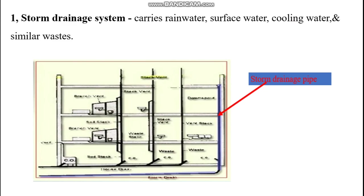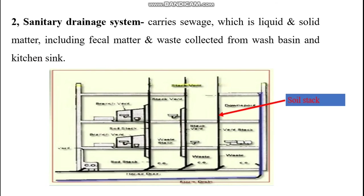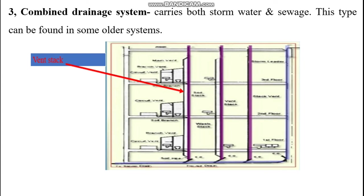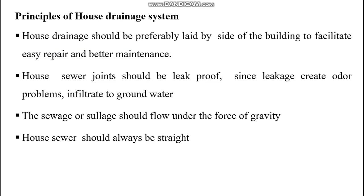Storm drainage system carries rainwater, surface water, cooling water, and similar wastes. Sanitary drainage system carries sewage, which is liquid and solid matter, including fecal matter and waste collected from wash basins and kitchen sinks. Combined drainage system carries both storm water and sewage, and this type can be found in some older systems.